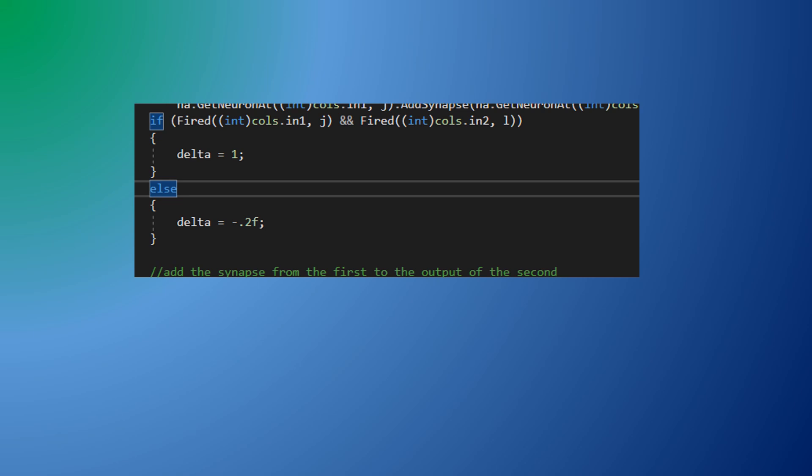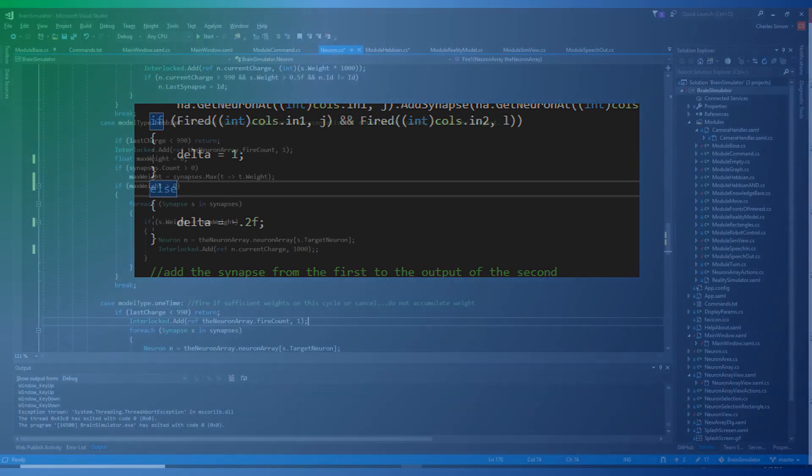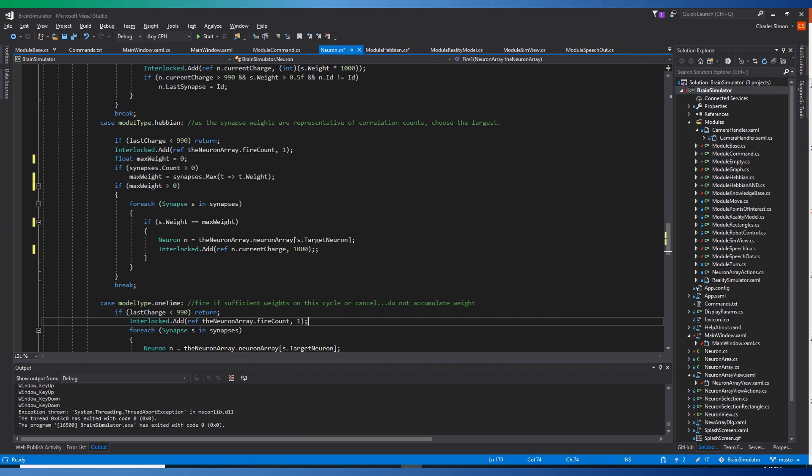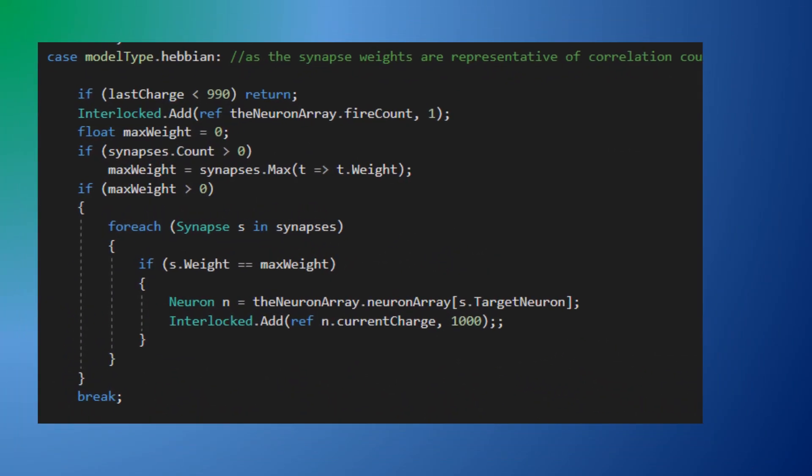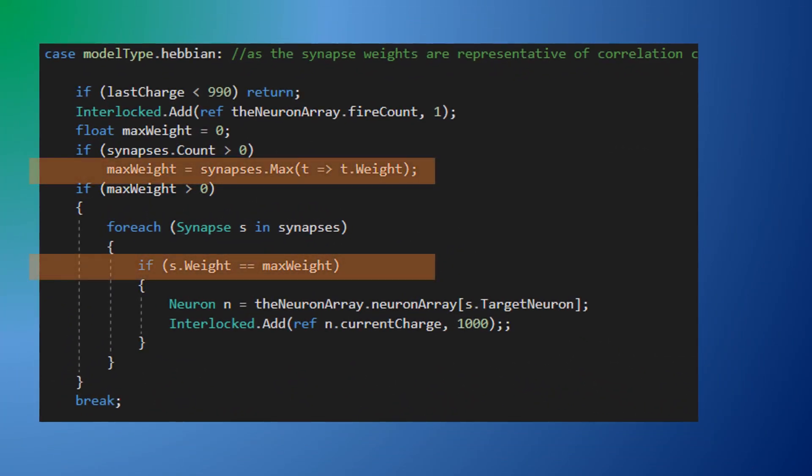Rather than normalizing the synaptic weights to be correct within the context of the neuron model I have customized the neuron model for those columns so these neurons stimulate the target with the greatest synaptic weight. Essentially the synaptic weight stores the raw concurrency information and the input neuron model evaluates the data when it fires.